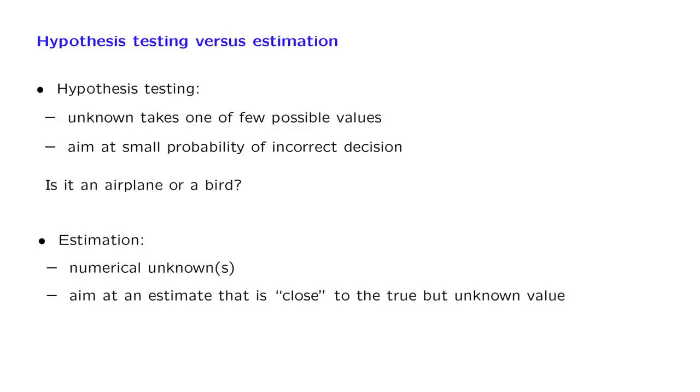So here, our performance objective is in terms of some kind of distance function. We want to be close to the truth, and typically we have a continuum of possible choices. That is, our estimates can be general real numbers.